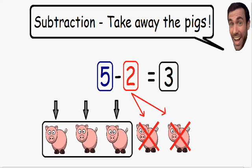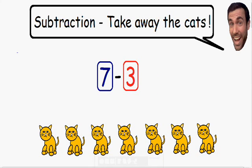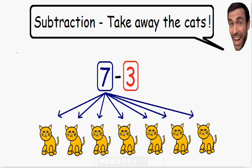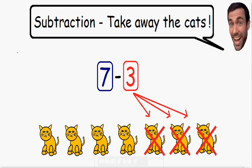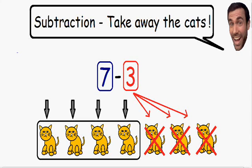Let's go over another example by taking away the cats. Here we have seven minus three. So we're starting with seven cats and we are subtracting three, which means we are taking away three cats. So if we start with seven and we take away three, how many cats do we have left over? Well we have four cats left over. So seven minus three is equal to four.